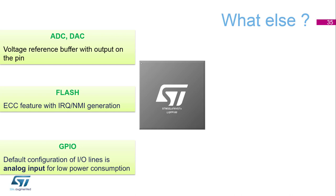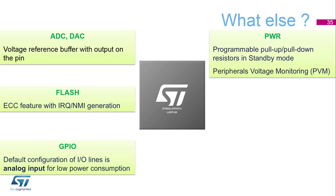The GPIOs offer analog input as a default configuration after power-on and reset, reducing current consumption. In standby mode, the pull-up and pull-down resistors can be turned on to guarantee safe voltage levels on selected GPIOs.